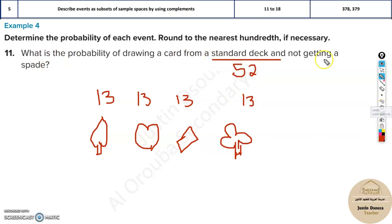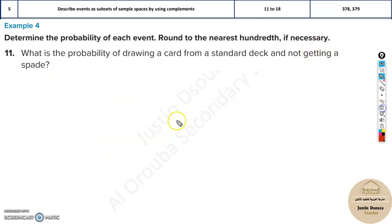So they're not asking the probability of getting a spade. They're asking what is the probability of not getting a spade. Before I continue with this problem, let me tell you this.